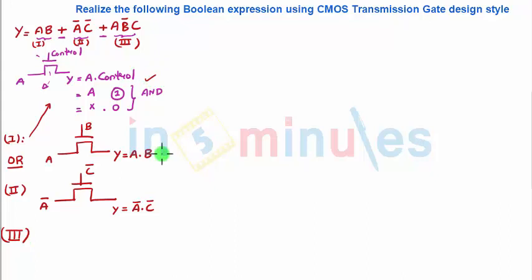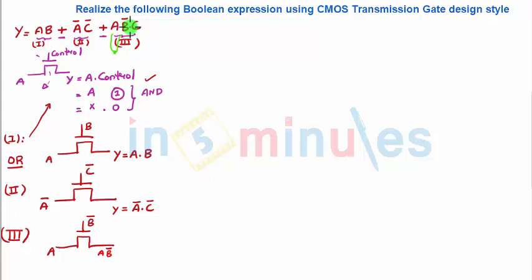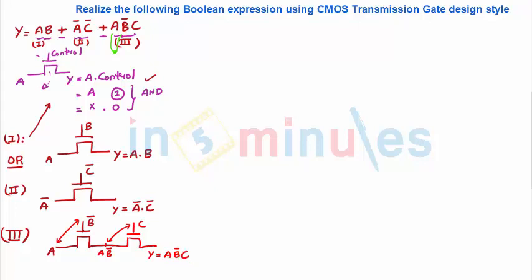With the two-input pass transistor logic shown, we first implement A·B̄: draw an NMOS with B̄ as control and A as input, giving A·B̄ at that node. Then, this entire sub-expression A·B̄ is AND'd (series) with C, so we add another NMOS with C as control, giving the final output Y = A·B̄·C.